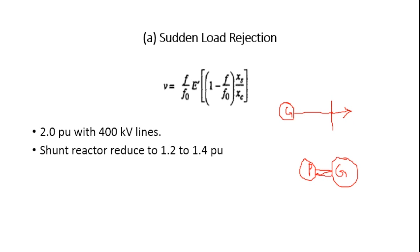Whenever load increases, the prime mover has to take that into consideration. If there is a load rejection, meaning load reduces, the prime mover has to reduce the total input given to the generator. If suddenly this load rejection is discontinued at this point — we are considering this as a fault — the speed governor and automatic voltage regulator will take action to restore the normal condition.